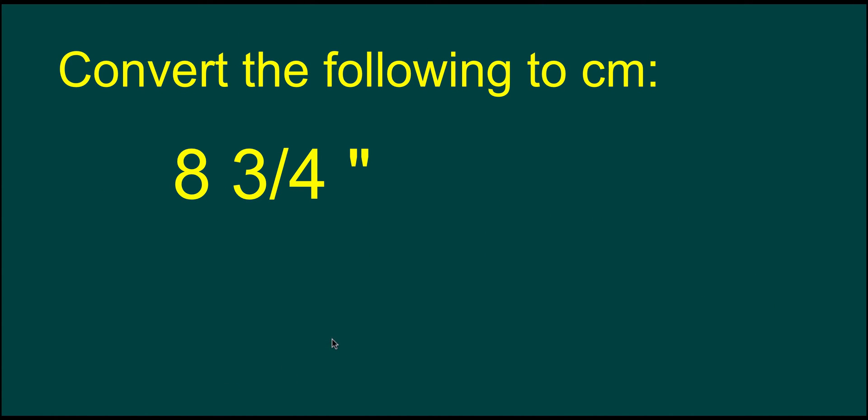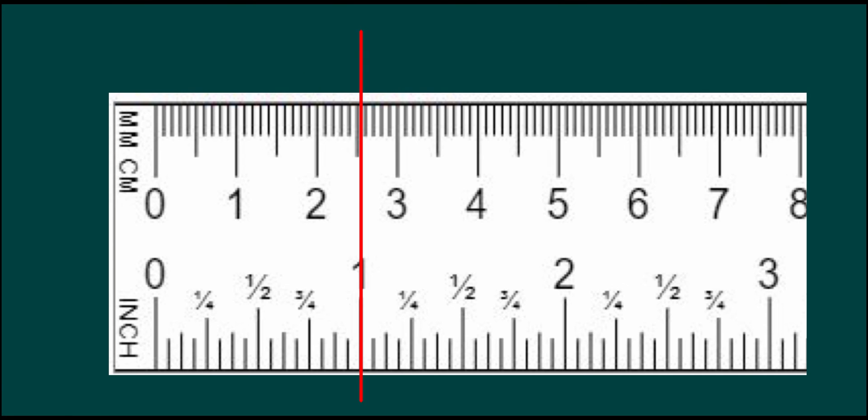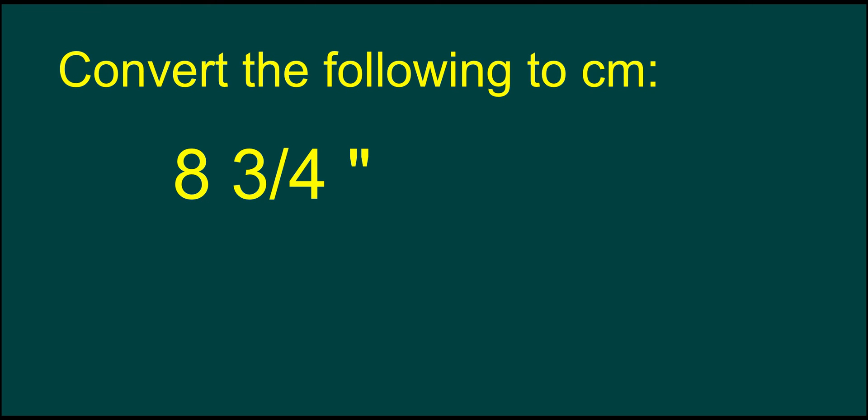A lot of times inches will be used with fractions. So if we go back to our ruler, you'll notice they're putting fractions in here. So this would be called a half an inch. This is three quarters of an inch. So when you're using the imperial system, a lot of times instead of putting a decimal, they will actually put a fraction.